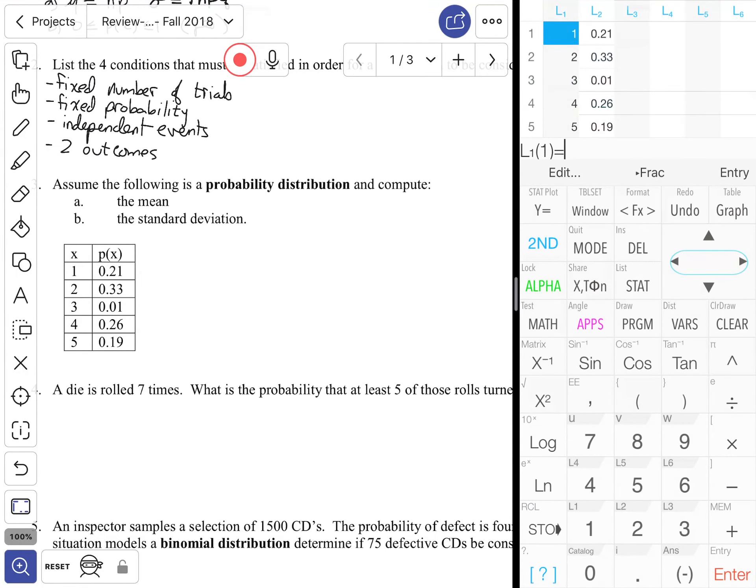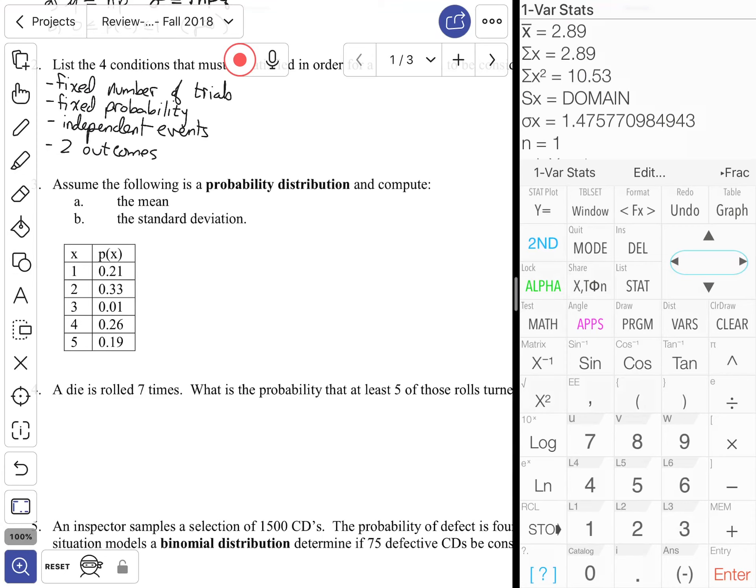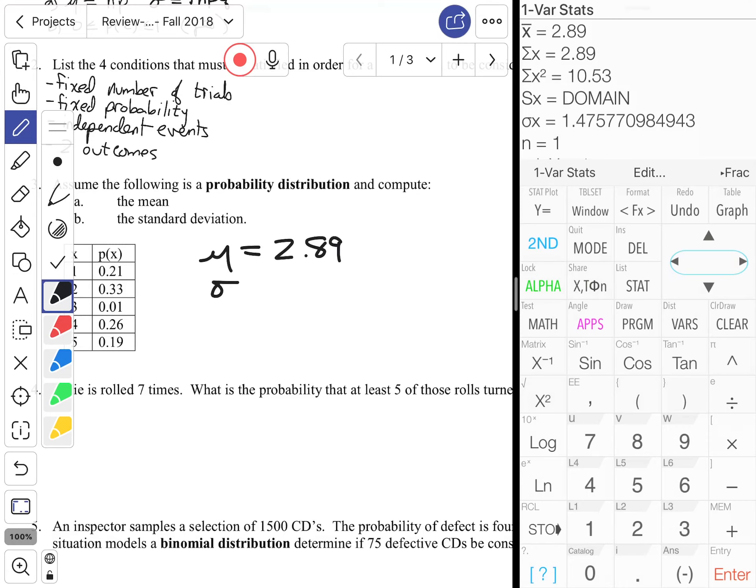The first two questions were fact-based just like the last two videos, so we're just going to jump right to number three. I took the liberty of typing that into the calculator already - stat edit. The data is typed in, in theory correctly. I'm going to do stat calc option one, data is in L1 and L2. Assume that the following is a probability distribution. The mean is 2.89 and the standard deviation is equal to 1.476 if rounded correctly.